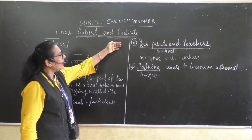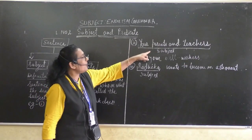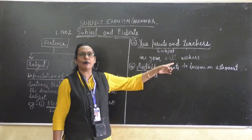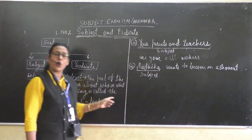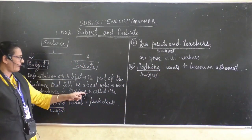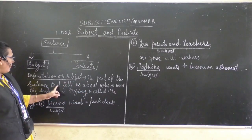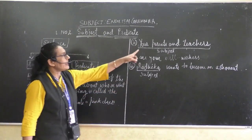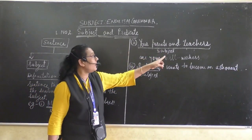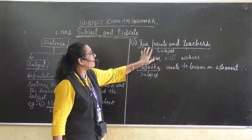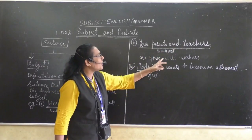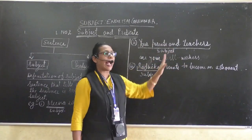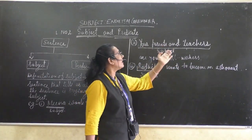The second example is: 'Your parents and teachers are your well-wishers.' The sentence tells us about who? It is telling about your parents. Your parents and teachers — that is what the sentence is about. So 'your parents and teachers' is the subject.